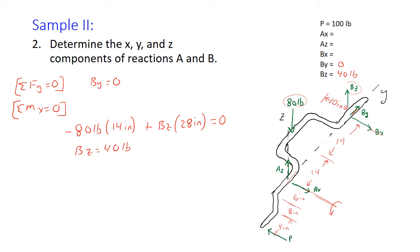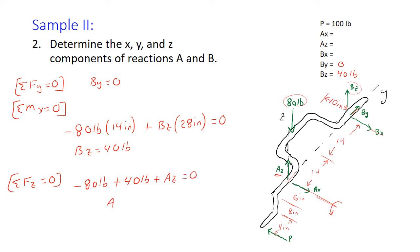Now we sum forces in the z-direction. We have minus 80 pounds from the applied load, plus Bz which we solved as 40 pounds, plus Az, all equal to zero. Solving, Az equals 40 pounds.